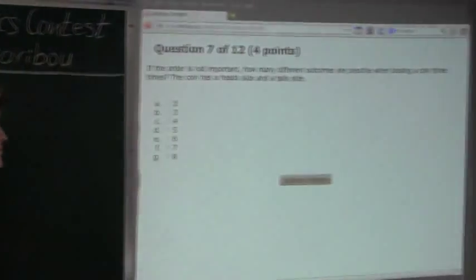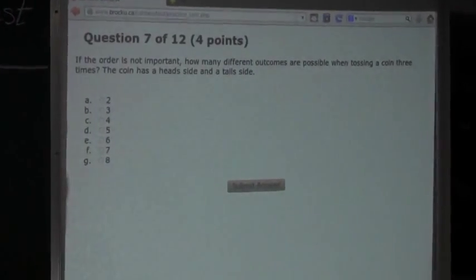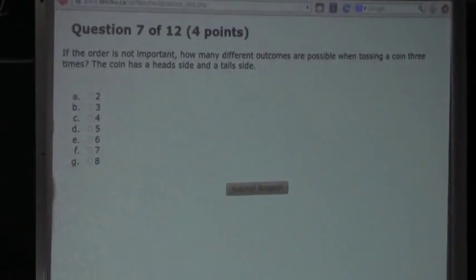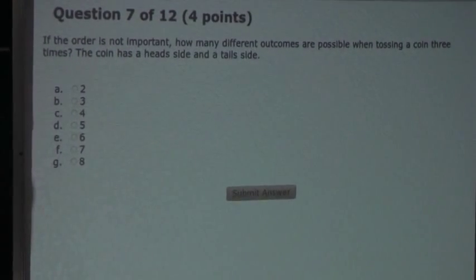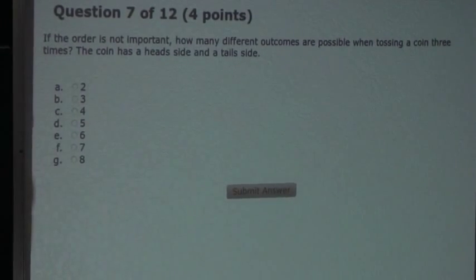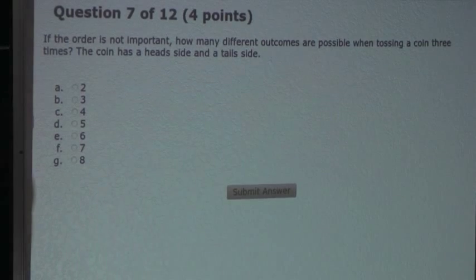So the question is, if the order is not important, how many different outcomes are possible when tossing a coin three times? The coin has a head side and a tail side.